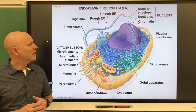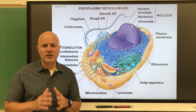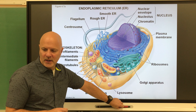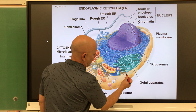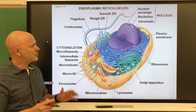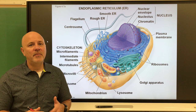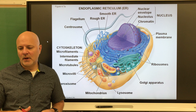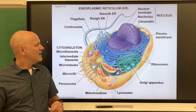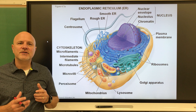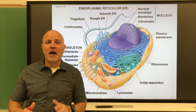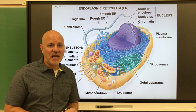Now let's look at cell organization and a cell's main features — features that all cells possess. First, all cells have a plasma membrane, also known as the cell membrane. It's the boundary of the cell, surrounds all cells, and is composed of a phospholipid bilayer embedded with proteins. It controls the movement of substances into and out of cells. All cells also have DNA — the genetic material. Note that not all cells have their DNA within a nucleus.